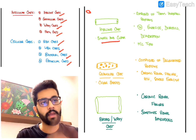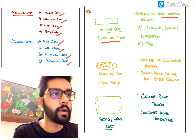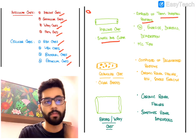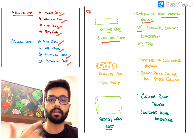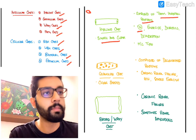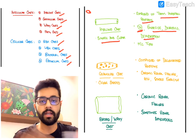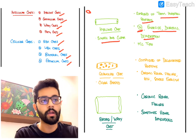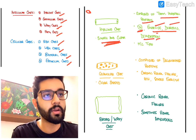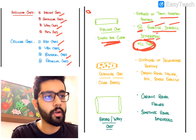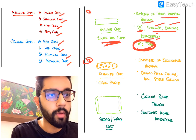Hyaline casts are smooth and clear acellular casts with a cylindrical shape, composed mainly of Tam-Horsfall proteins. They can be seen in normal individuals - since Tam-Horsfall proteins are physiologically excreted, they are the largest proteins excreted in urine. They are also seen with severe exercise, diuretics, and dehydration. The most common type of urinary cast is the hyaline cast.